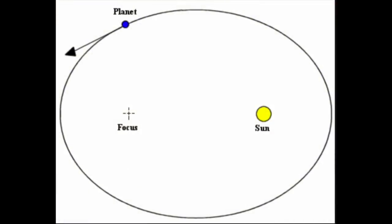Here we have our ellipse. We have our two focuses, or foci, of the ellipse, and the sun's at one of them, and then there's that planet sitting out there, revolving around the sun in a counterclockwise fashion. That's pretty much it for the first law of planetary motion — it's an ellipse, and the sun's at a foci of the ellipse.